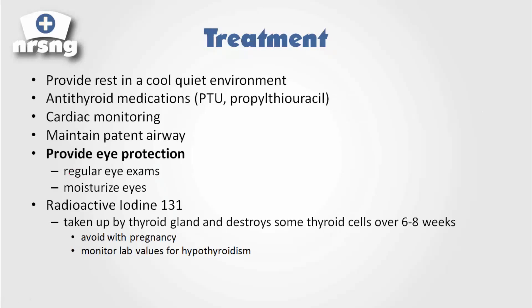For treatment, remembering the hypermetabolic state, we want to provide the patient a quiet place to rest to decrease stimulation. When you get a question about what type of environment you want for a patient with hyperthyroidism, you want a quiet room, lights out, TV off — just try to calm them. We're going to provide cardiac monitoring, watching for tachycardia that could lead to SVT. We want to provide antithyroid medications such as PTU — propylthiouracil. We also want to maintain a patent airway, as the patient can have neurological effects, and provide eye protection with moisturizing drops.